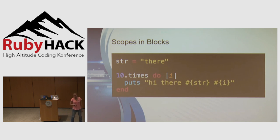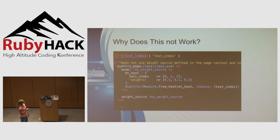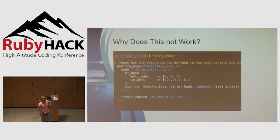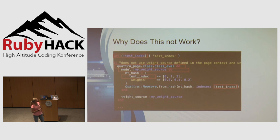I recently ran into a situation in my code where this scenario seemed to stop working. It was an RSpec example where I had a let block that defined something called test_index. Inside my it block I was creating two nested blocks — the first passed to class_eval, and the second created inside that and passed to a method called model. It was inside the second nested block that I was trying to use test_index.